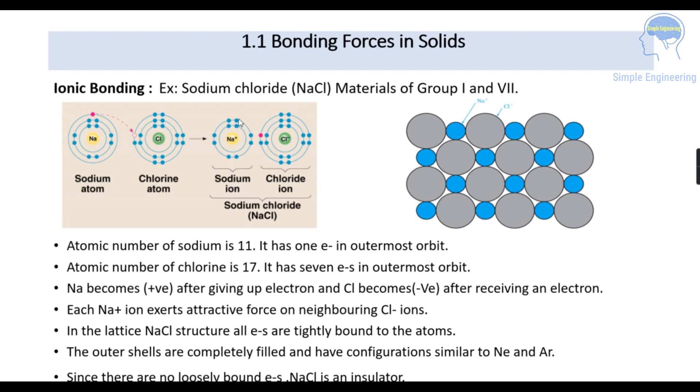Here sodium chloride's outer orbit is not there because that one electron is accepted by the chlorine. The sodium ion's electron is given to the chlorine. Chlorine has seven electrons, and by accepting one electron from sodium it becomes eight in the outermost orbit.